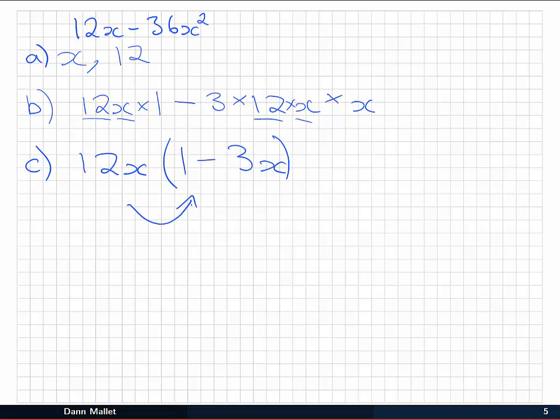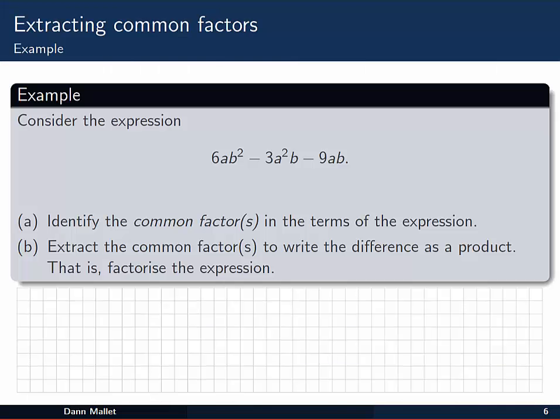If we want to check that, just bust those brackets open again. And you'll get 12x minus 36x squared again. Exactly the same thing as we started with. So that's our first factorizing example.